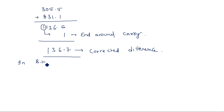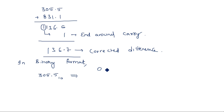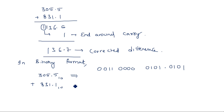Now let us do the same operation in binary format. The decimal number 305.5 is converted to BCD binary: 0 is 0000, 3 is 0011, 5 is 0101, dot, 5 is 0101. The nines complement number 831.1 is also converted: 8 is 1000, 3 is 0011, 1 is 0001, dot, 1 is 0001.